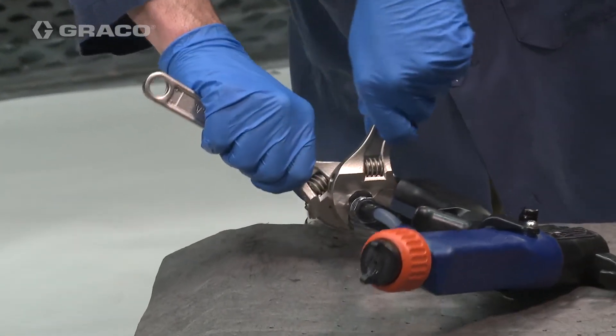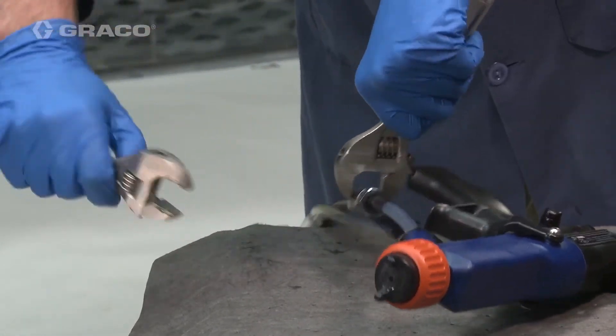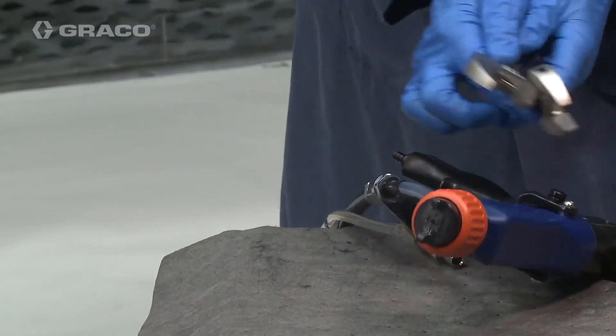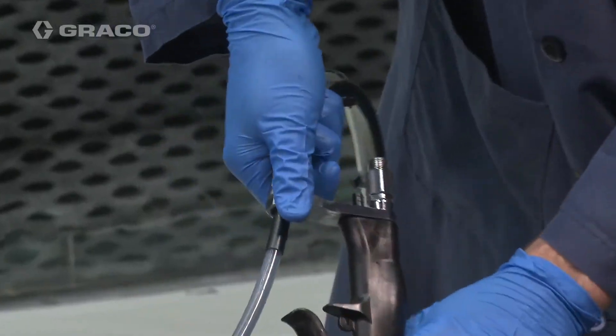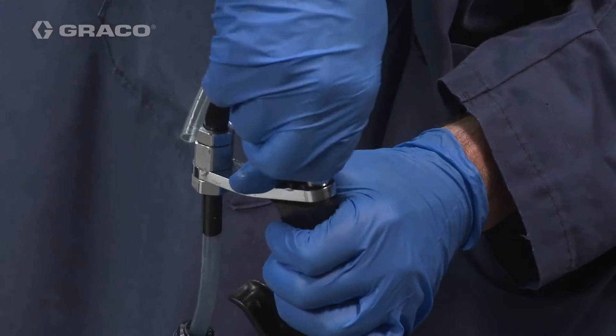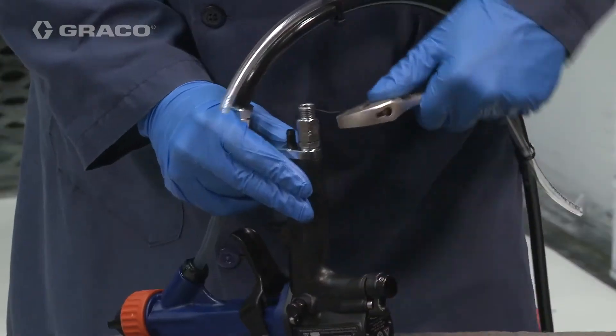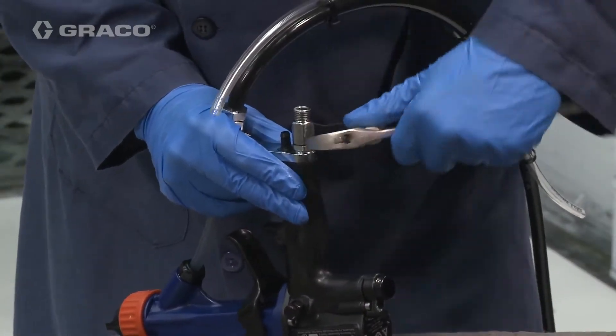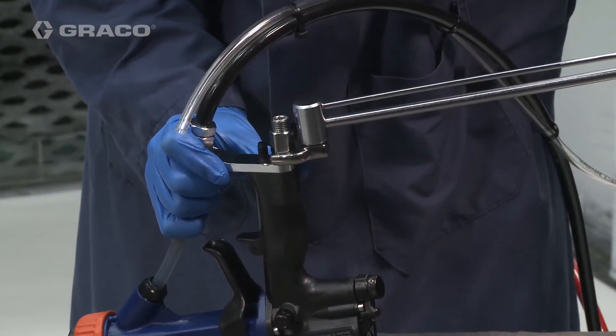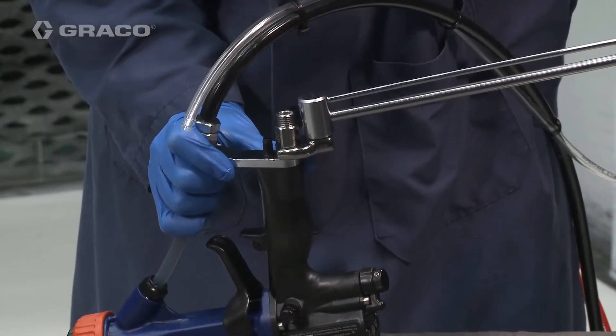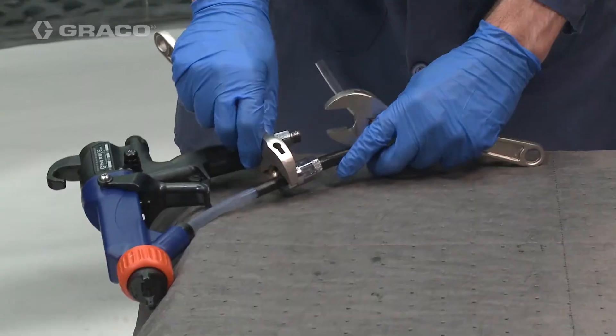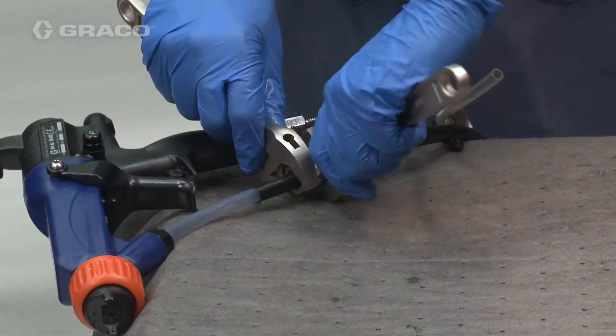Loosen the strain relief nut on the hose so that the bracket can move freely on the fluid hose. Align the bracket and install the air inlet fitting. Tighten the fitting between 75 and 85 inch pounds. Tighten the strain relief nut to secure the hose.